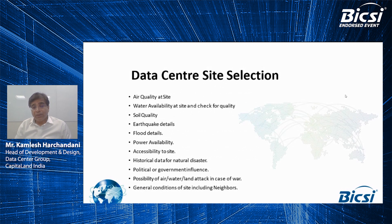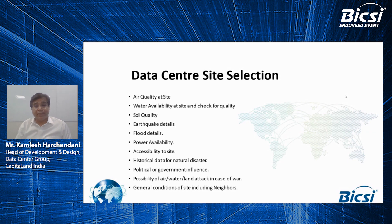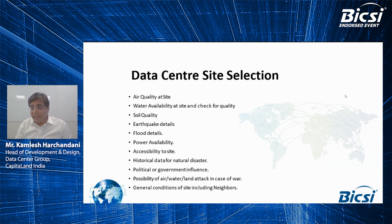Moving on to site selection: these parameters need to be assessed — air quality, water availability, soil quality, earthquake details, flood details, and power requirements. These are the basic hygiene factors we need to look at for a site. We also look at the size and dimension of the land parcel corresponding to our capacity planning to get the most optimized design. Efficiency and design optimization are key factors when selecting any land parcel — by selecting the right land parcel, it helps you to optimize design so as to deliver optimum capacity with highest efficiency.